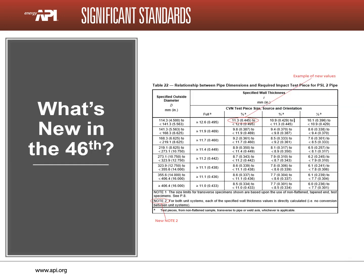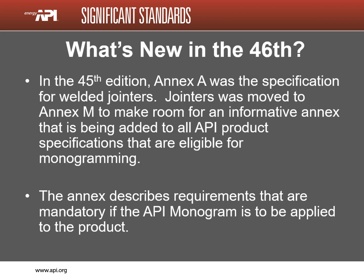This is the revised Table 22. Annex A used to be the location for welded jointers. The jointer's annex has been reassigned to Annex M to make room for the new Annex A. Annex A is in the process of being added to all product specifications to show the link between the product specification and the API monogram program. This informative annex for licensees describes the requirements that become normative if the API monogram is to be applied to the product.